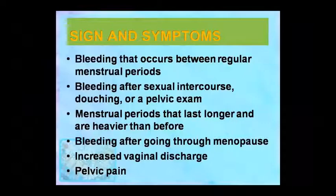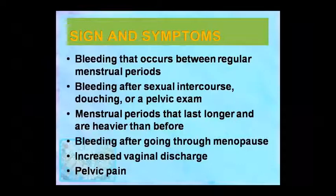Symptoms include: irregular bleeding between menstrual cycles — even 10 to 15 days after the last period a patient may start bleeding. After sexual intercourse, douching, or pelvic examination, there may also be bleeding.